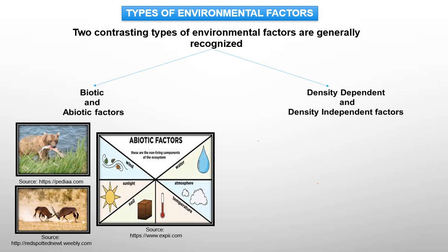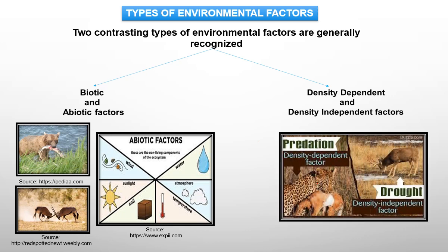The next types are density dependent and density independent factors. Predation is a density dependent factor and drought is a density independent factor. Density dependent factors are often biotic variables. Details about density dependent and density independent factors are discussed in the next slides.